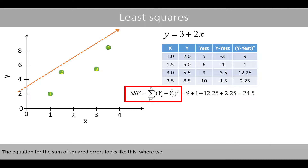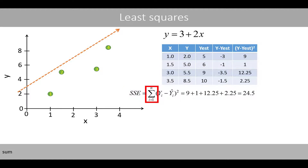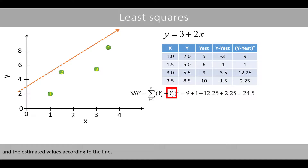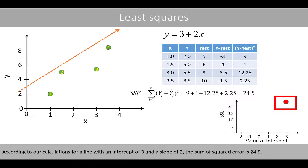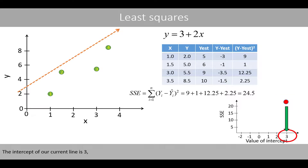The equation for the sum of squared errors sums the squared differences between the observed values and the estimated values according to the line. Let's create a plot where we put the sum of the squared errors on the y-axis and the value of the intercept for the line on the x-axis. According to our calculations, for a line with an intercept of 3 and a slope of 2, the sum of the squared errors is 24.5.